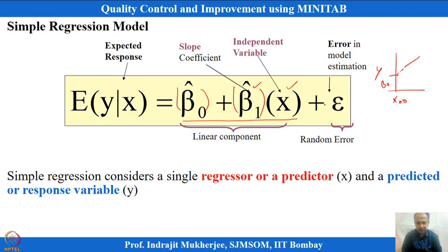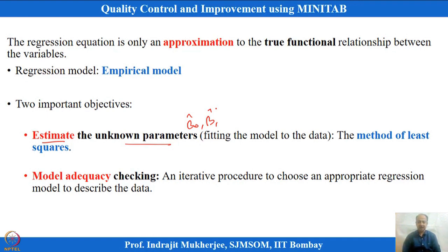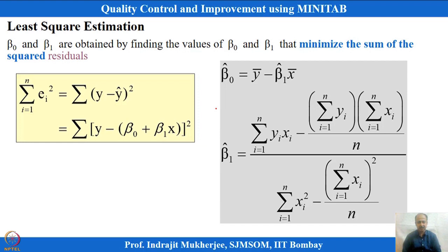β₀ and β₁ are the two important parameters that need to be estimated from the model. Once we estimate β̂₀ and β̂₁, we also have to perform model adequacy checks — similar to what we did in ANOVA analysis. Regression is essentially an extension of analysis of variance, so model adequacy checks are also required here.